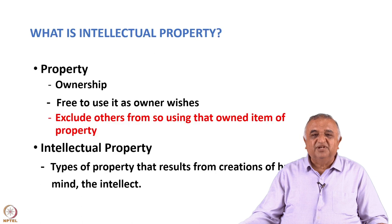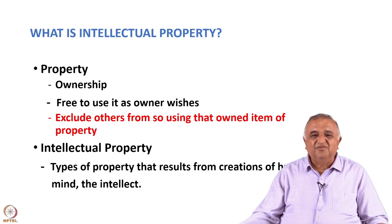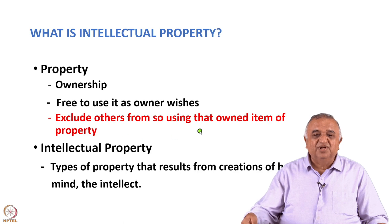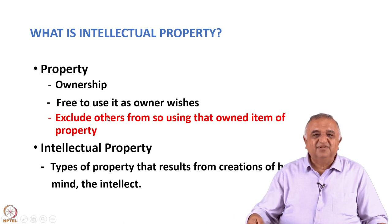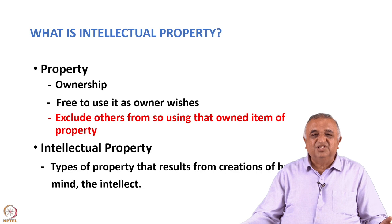What is intellectual property? It is basically a concept of property applied to the creation of human intellect. The concept of property means you own it, you are free to use it the way you want, and most importantly, you can exclude others from using that item of property. If I have a house and am keeping it locked, I am excluding you from using it. Exclusion is an important aspect of ownership of property. The same concept applied to the creation of the human mind — the intellect — is intellectual property.